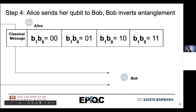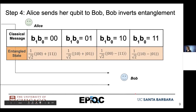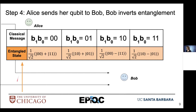Step four: Alice now sends her qubit to Bob over the quantum channel. Bob now has both parts of that entangled pair — two entangled qubits in his possession. This is where the need for a quantum channel in superdense codes arises. The entangled state Bob receives is one of four: same entangle, opposite entangle, same entangle with phase, or opposite entangle with phase.